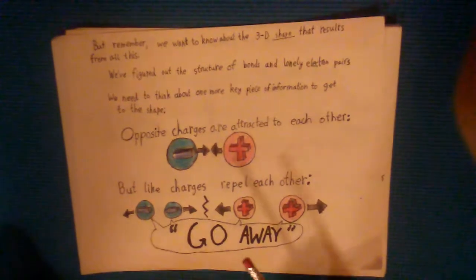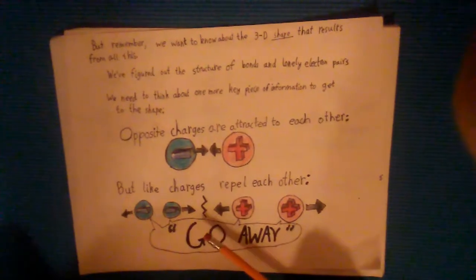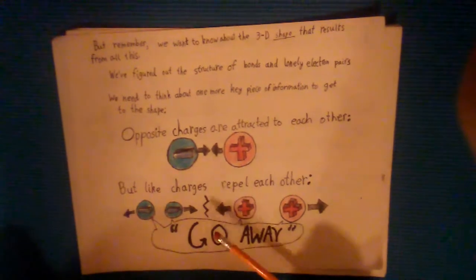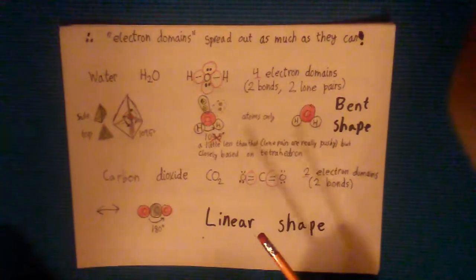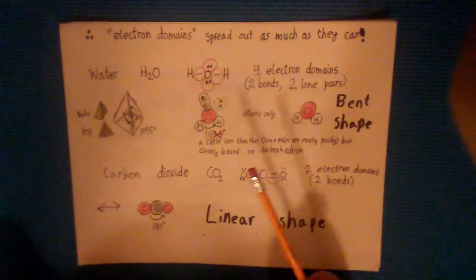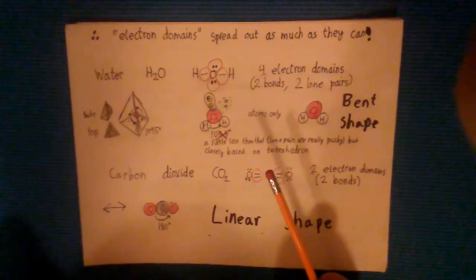To go from these structures of bonds to the 3D shape we need to remember that electrons are negatively charged and things with the same charge repel each other. This means all these places with electrons called electron domains are going to spread out as far as they can.